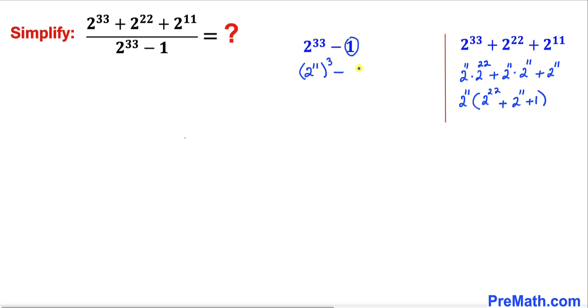I can tweak this thing. I can write 1 as 1 power 3. And now we can see the difference of 2 cubes, this minus this. So therefore we are going to use this famous identity: a cubed minus b cubed.